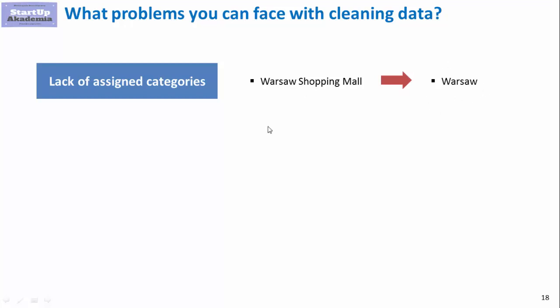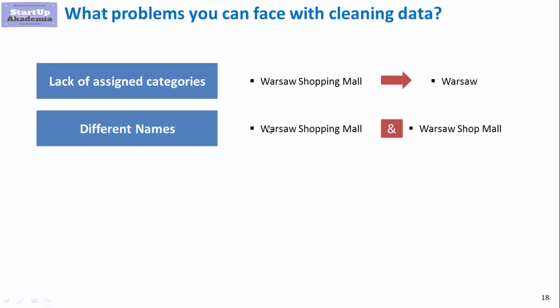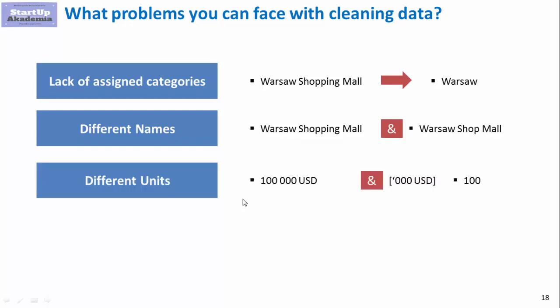You can also have a situation where you have almost the same identical name but misspelled or written differently. For example, the same shop entered as 'Warsaw Shopping Mall' and 'Warsaw Shop Mall' — these are the same store but inconsistently recorded.